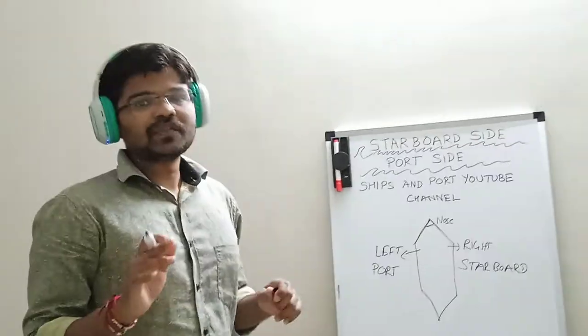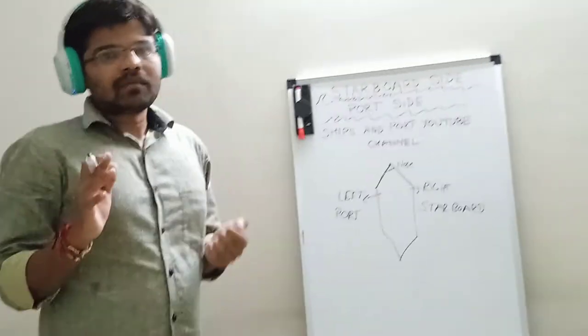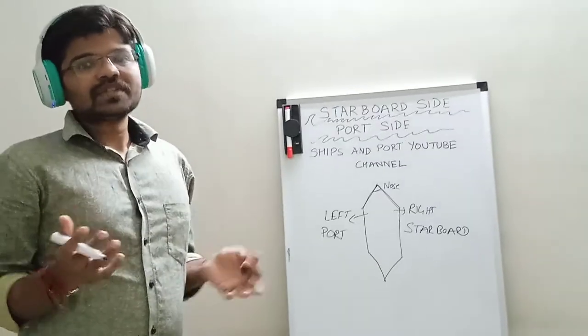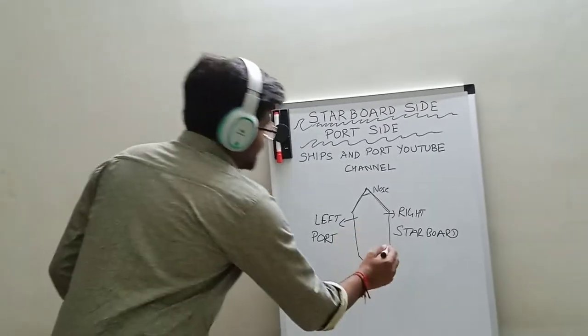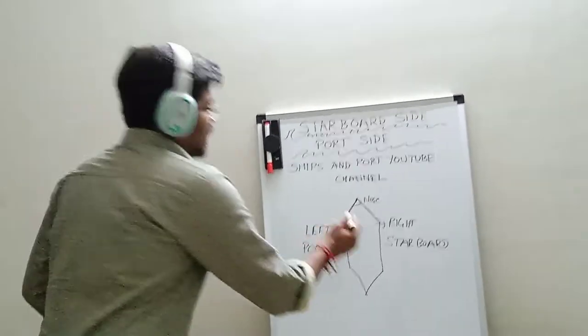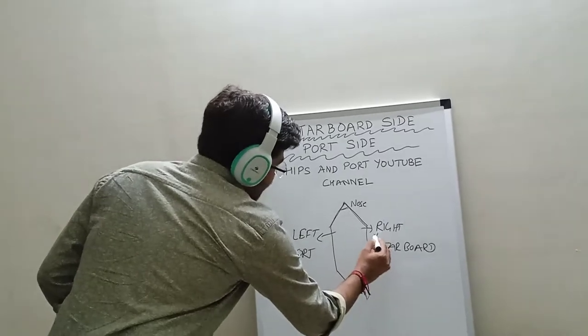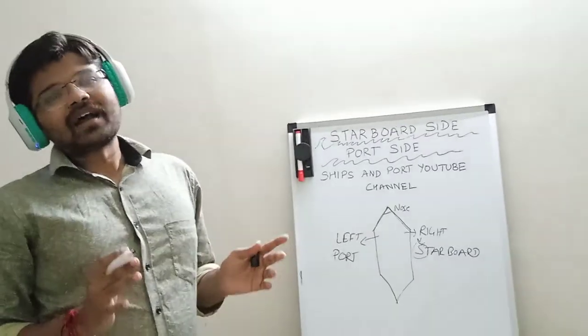So friends, if you just want to keep in your mind which side is the starboard side and which side is the port side, just remember that in ABCD the S comes after the R, so right side will be the starboard side and the left side will be the port side.